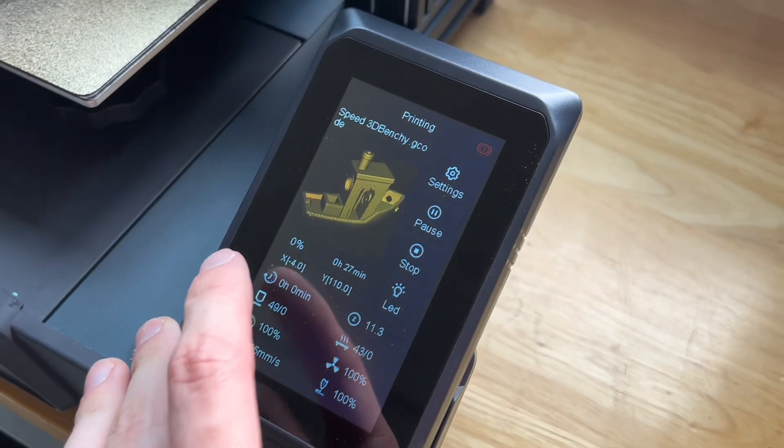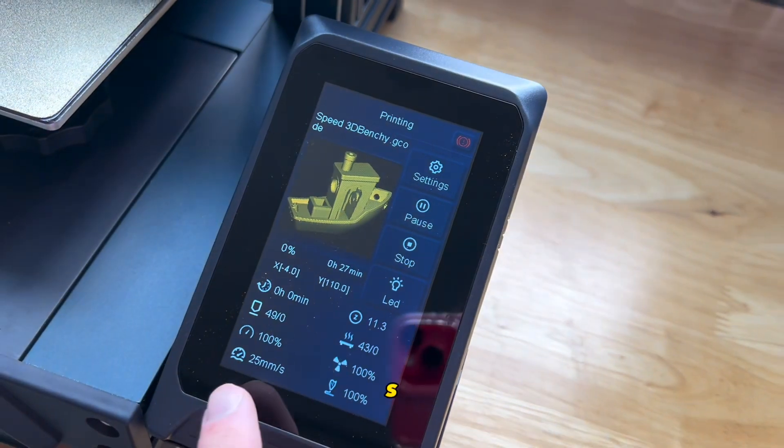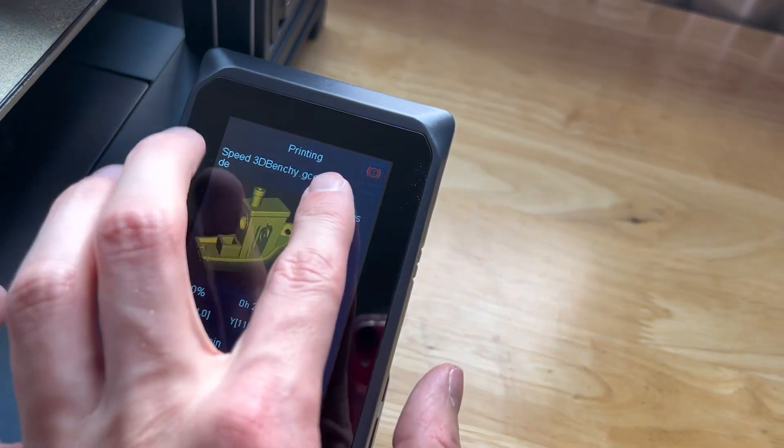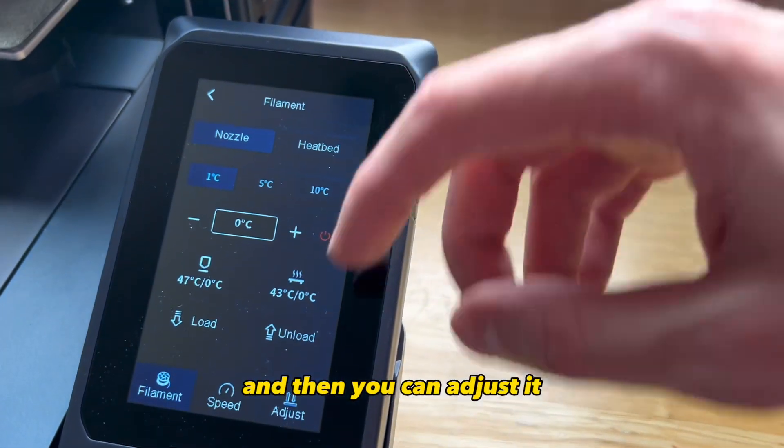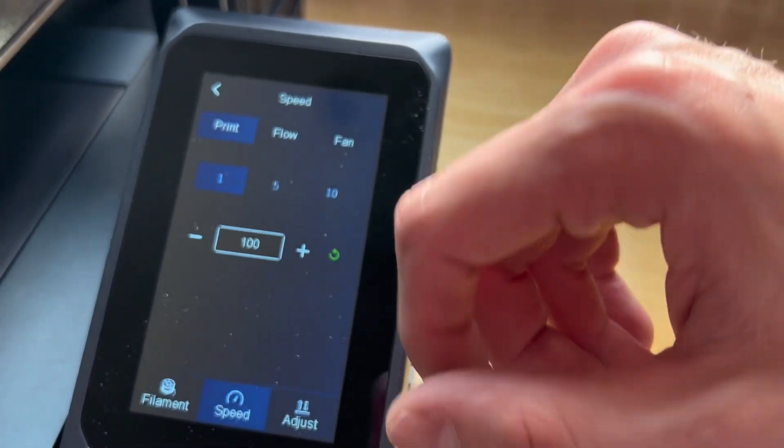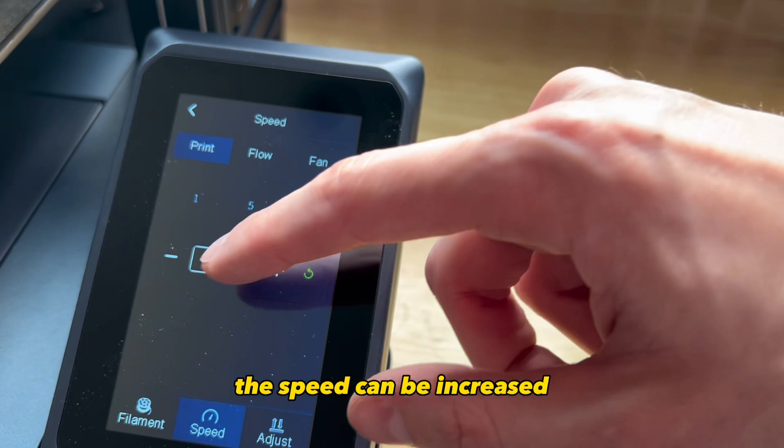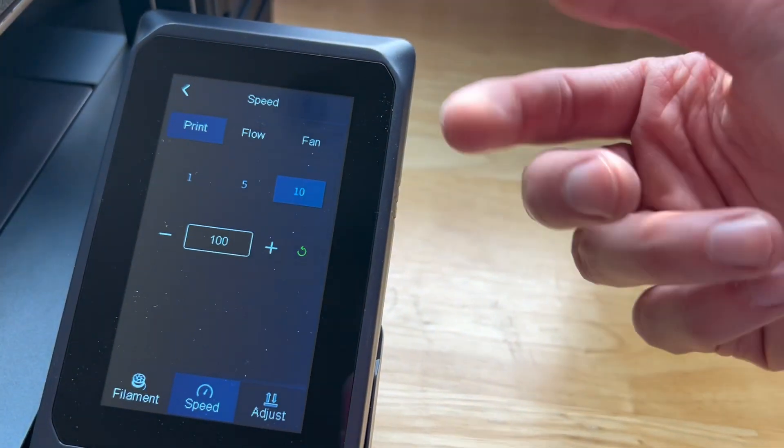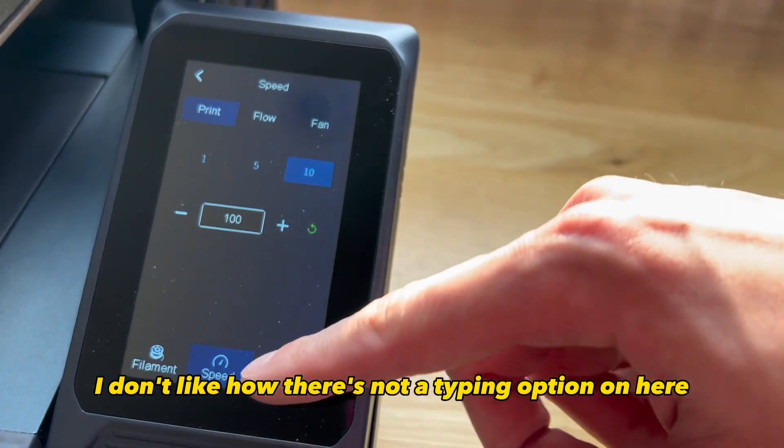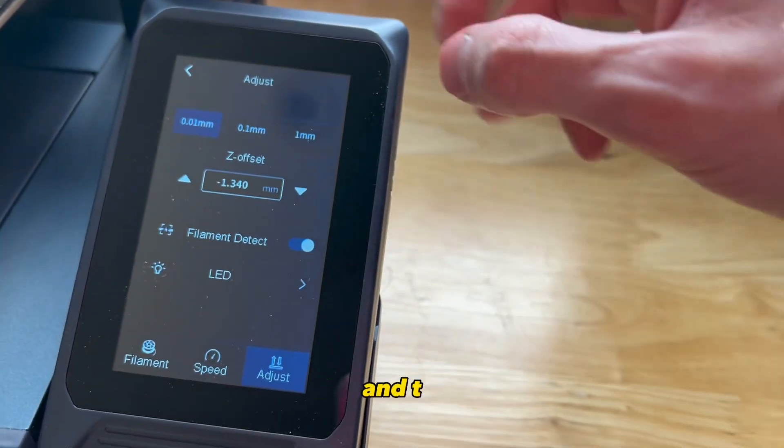Some other features this machine offers while you're printing is you can go to settings and then you can adjust it from their menu. The speed can be increased by 1, 5, and 10 increments, however I don't like how there's not a typing option on here.